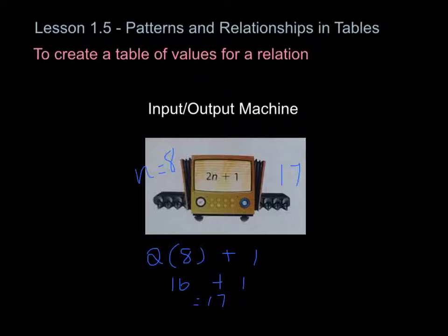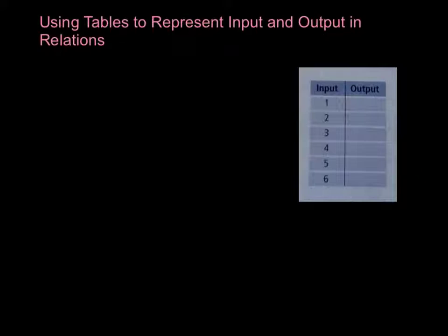However, in this lesson, we're going to move away from the actual input-output machine and work a little bit more with tables. This first example would be a situation where you have an algebraic expression, and you're going to follow the same kind of process as the input-output machine, but you're going to record your input and output into a table like this one here. We're going to use the same expression as we did in the first example, which was 2n plus 1. So n, in this situation, would be our input.